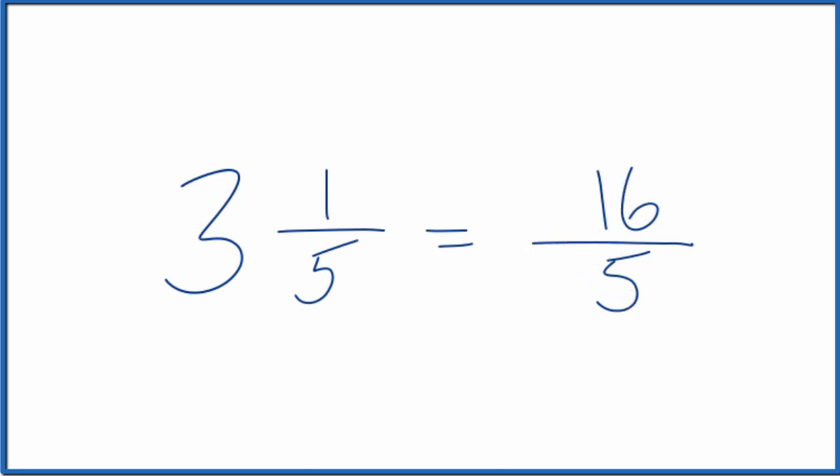Let's do that one more time. 3 times 5 is 15 plus 1. That's our 16. That's our numerator. The denominator, just bring it across.